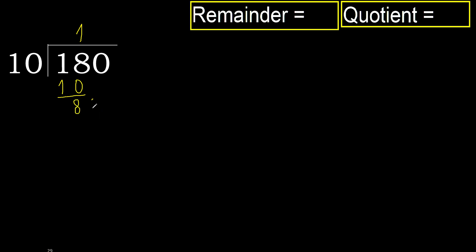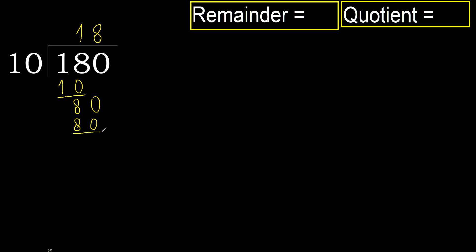Next, 80. Multiply by 8 is 80. It is not greater, ok. Subtract: 80 minus 80 is 0.